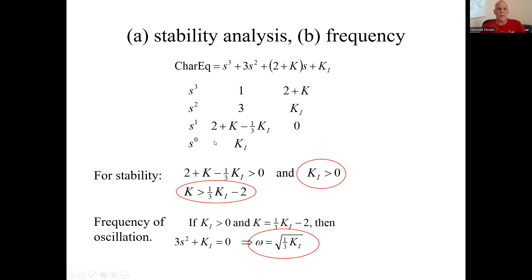For sustained oscillation, that's when you get all zeros in this S^1. So K exactly equals one third K_I minus two. Then you go up to this auxiliary equation, which is 3S squared plus K_I equals zero. You plug in minus omega squared for S squared. Solve for omega again. It's that.